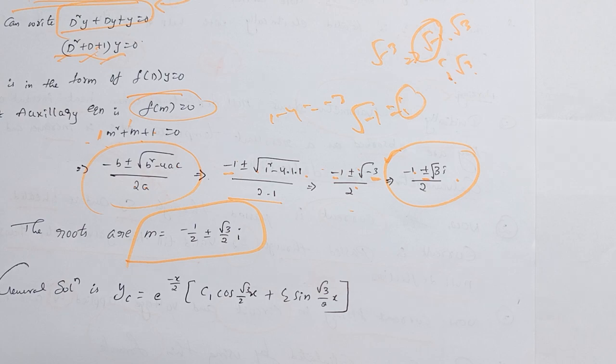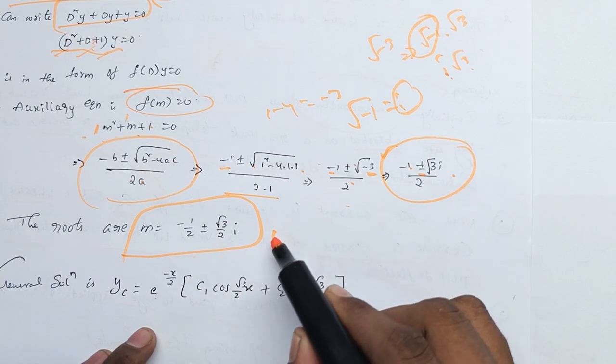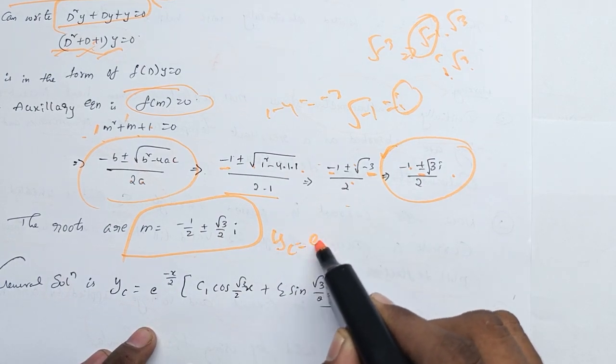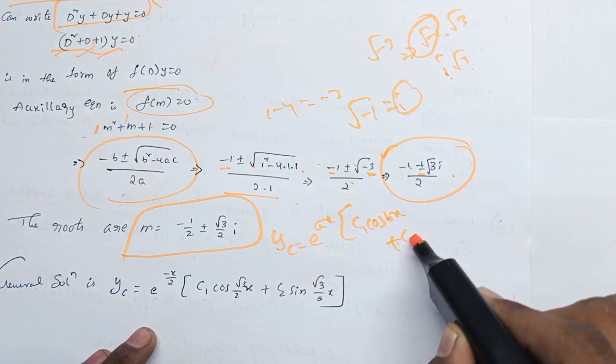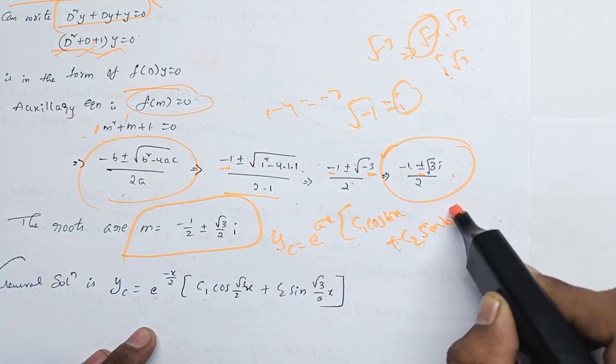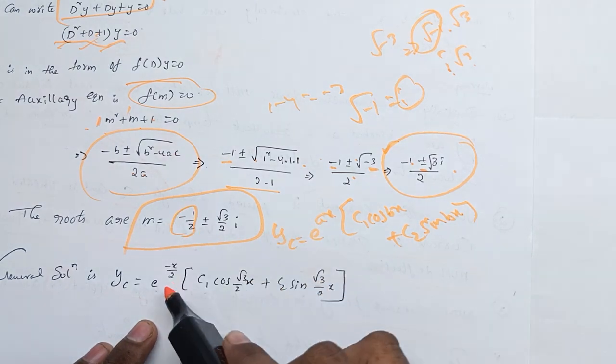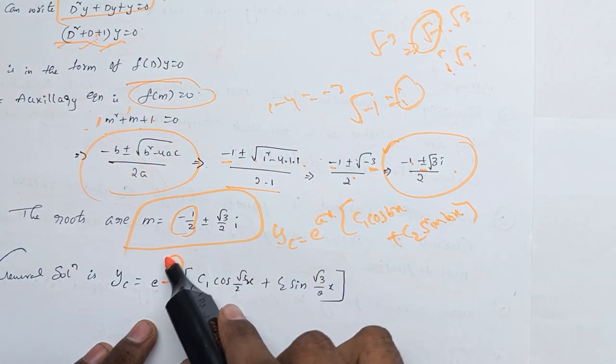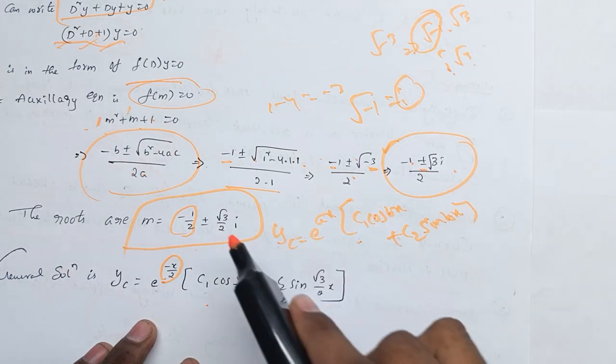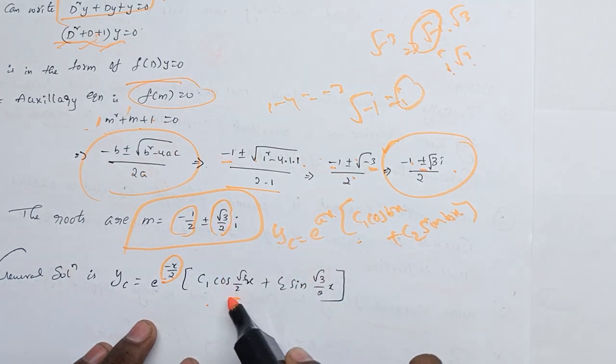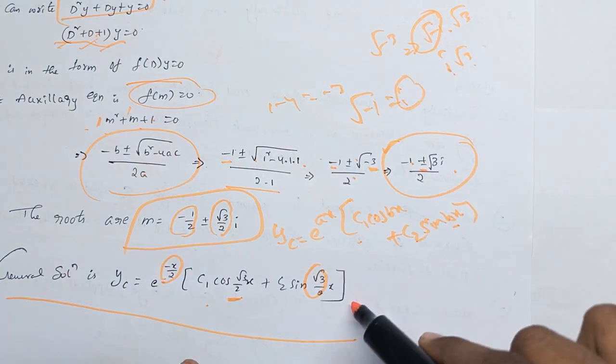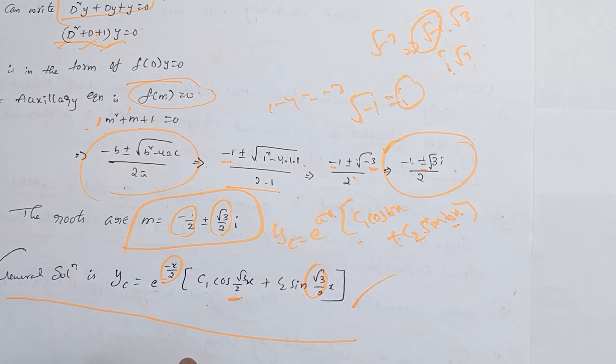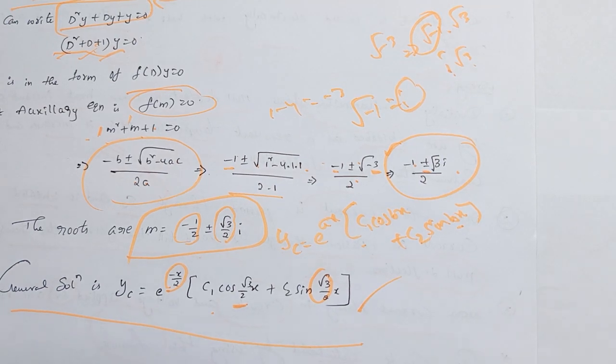You can write the formula for complex roots: Yc = e^(ax)[c₁ cos(bx) + c₂ sin(bx)]. So Yc = e^(-x/2)[c₁ cos((√3/2)x) + c₂ sin((√3/2)x)]. This is the general complementary solution.